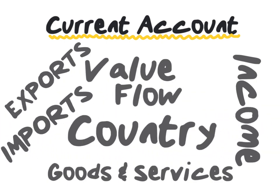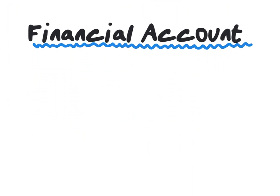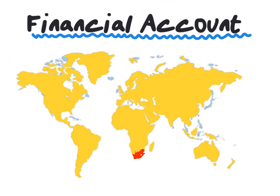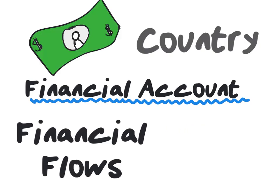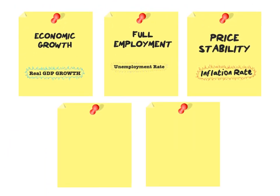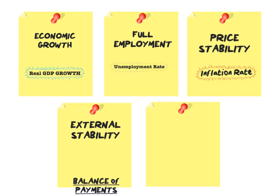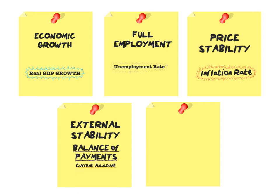Important to remember: exports are seen as injections into our economy. Secondly, the financial account. This account summarizes the inflow and outflow of funds. The financial account therefore indicates the financial flows of a country in relation to the rest of the world. This concludes our fourth objective, where external stability is measured by means of the balance of payments, which consists of the current and financial account.